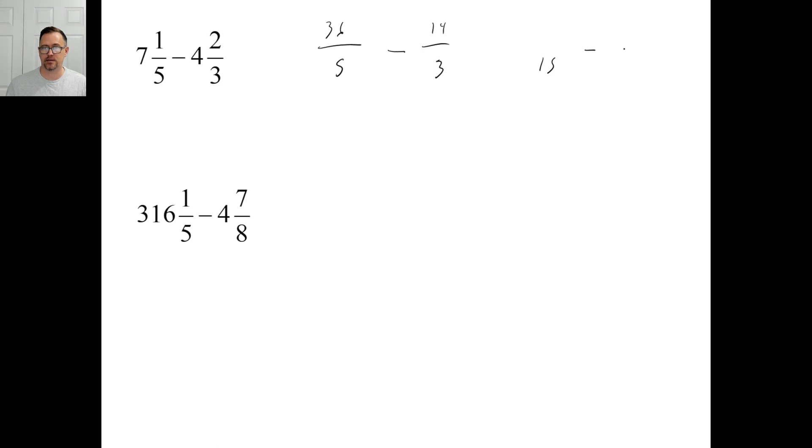Common denominator, obviously fifteen. So we have fifteen minus fifteen. Five times three is fifteen. So thirty-six times three is a hundred eight. Three times five is fifteen. So fourteen times five is seventy. By the way, real quick, just very quickly. Look at this. This is about seven, right? Minus about five. Correct? So your answer should be somewhere around two-ish. So when you get a final answer, if you got seven and one-fifth minus four and two-thirds is sixty-nine and three-fifteenths or whatever, you got to go, wait a minute, that's ridiculous.